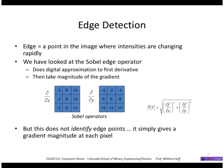However, the magnitude of the gradient doesn't identify an edge point — it simply gives you a number. What we would really like is a binary output: yes, there is an edge there, or no, there isn't an edge there.